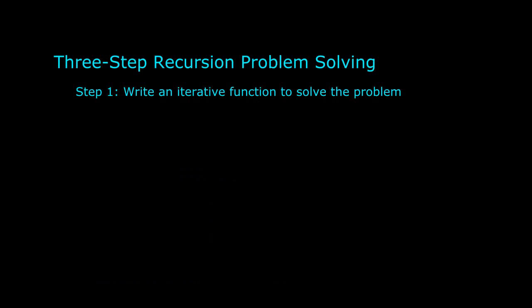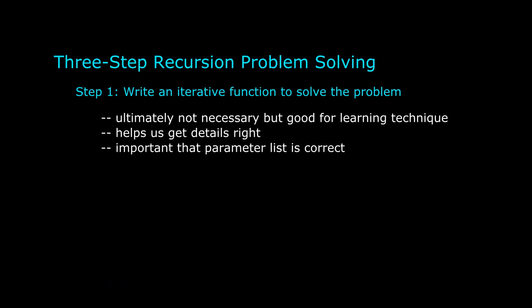Here we go. Step one. Write an iterative, that is non-recursive, function to solve the problem. You'll see exactly why we need to do this in the next step. But it also helps us get straight all the issues in the problem that have nothing to do with recursion. Among other things, it helps us get the parameter list correct. I can't say how many times I've seen students go off in the wrong direction on the parameter list in a recursive problem. The simple rule is, your parameter list will most likely look exactly the same, whether you are writing the function recursively or iteratively. In this problem, we'll have three parameters. The two arrays and a third parameter indicating the size of the arrays. The function will return the sum.